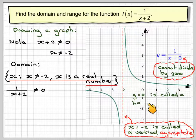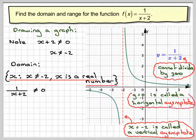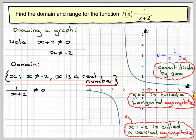So y is equal to 0 is called a horizontal asymptote. We don't put a dotted line there because it's on the axis.